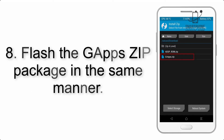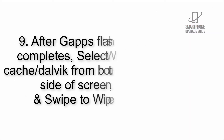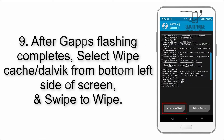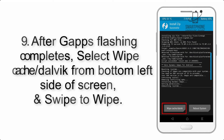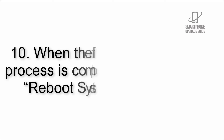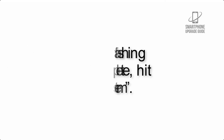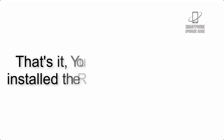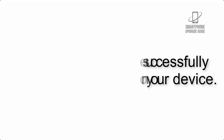Step 8: Flash the GApps zip package in the same manner. Step 9: After GApps flashing completes, select Wipe Cache and Dalvik from the bottom left side of the screen and swipe to wipe. Step 10: When the flashing process is complete, hit Reboot System. That's it — you have successfully installed the ROM on your device.